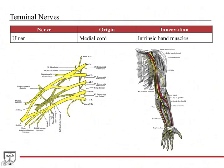The ulnar nerve is the only terminal nerve of the medial cord. It comes off the medial cord and travels down the medial side of the arm, the elbow, and the forearm. It doesn't innervate anything in the arm, but in the forearm it innervates muscles in both the flexor and extensor compartments. It then travels into the hand where it does sensory innervation and a lot of the intrinsic muscles that move the fingers and the thumb.